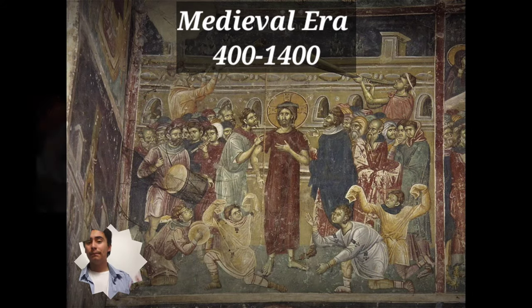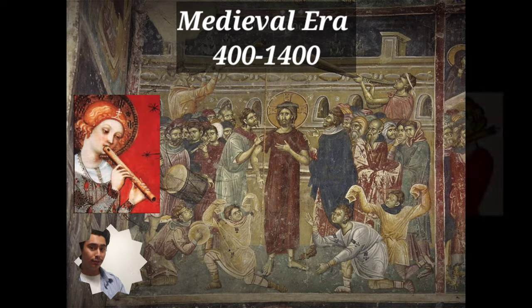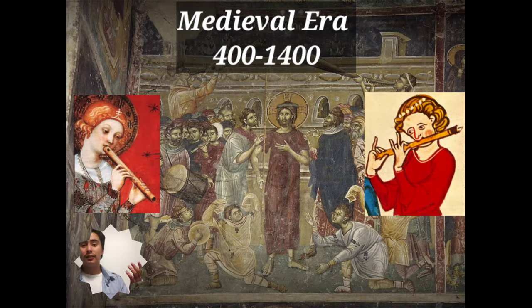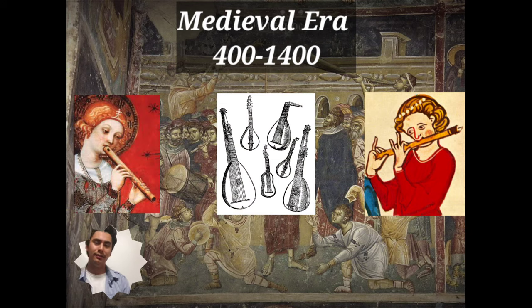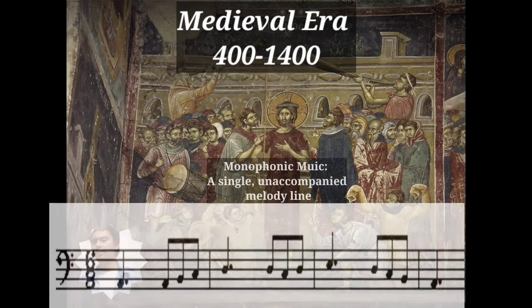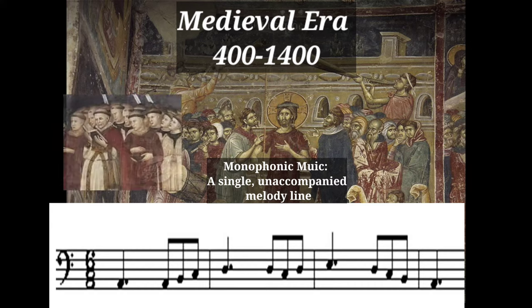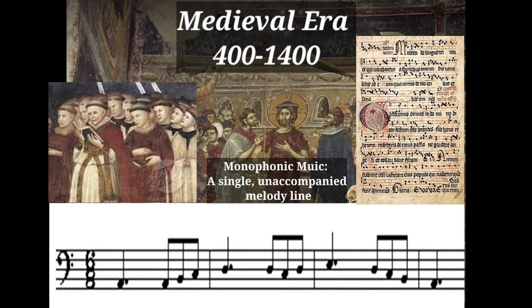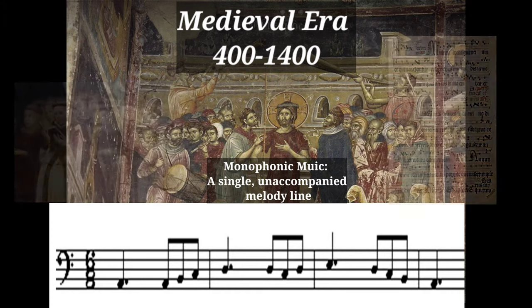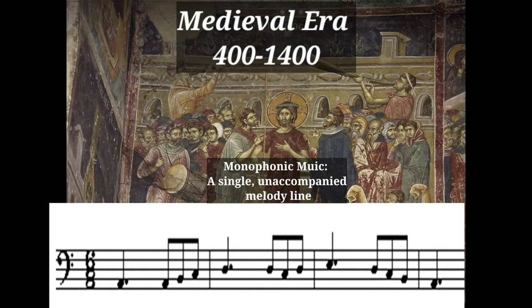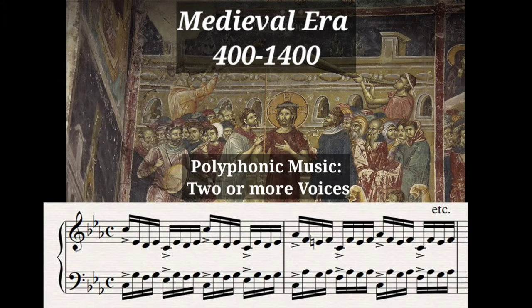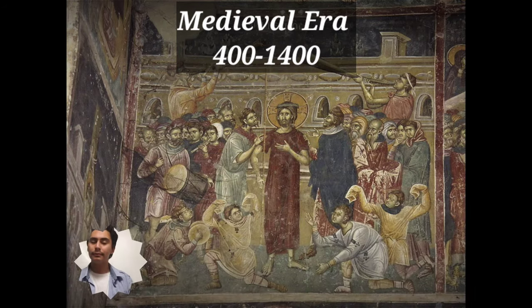Instruments included the recorder, the flute, and some plucked stringed instruments. Monophonic music defined this period — a single unaccompanied melody line that was usually sung by monks. The Gregorian chant was one of such. In addition to monophonic music, the use of polyphonic music, using two or more voices, began to emerge at this time. Let's head over to the next era.